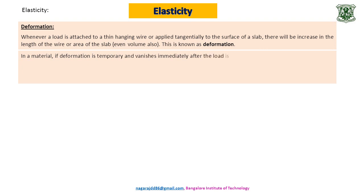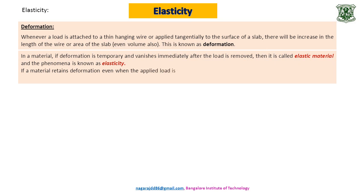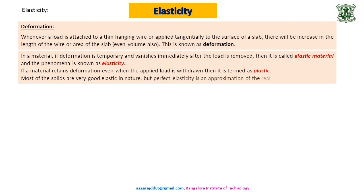In a material, if deformation is temporary and vanishes immediately after the load is removed, then the material is termed as elastic and the phenomenon is known as elasticity. If a material retains its deformation even when the load is withdrawn, then it is termed as plastic. Most solids are very good elastic in nature, but perfect elasticity is an approximation of the real world. If the deformation vanishes, it is elastic; if it is retained, it is plastic.